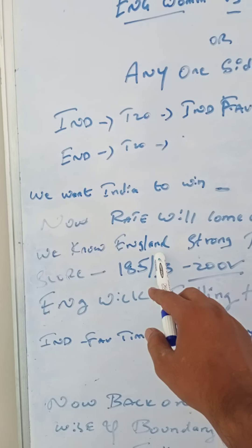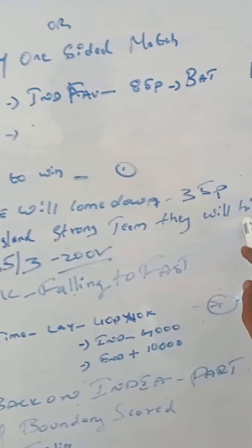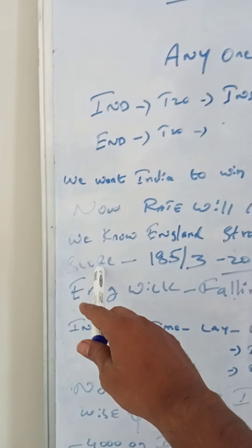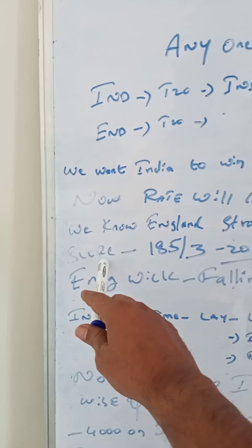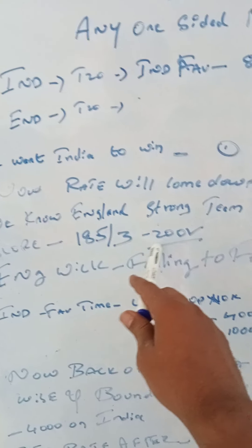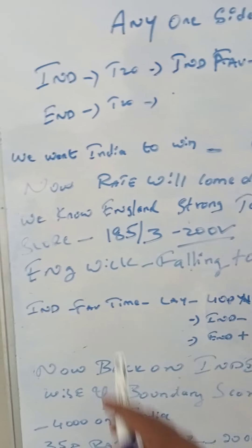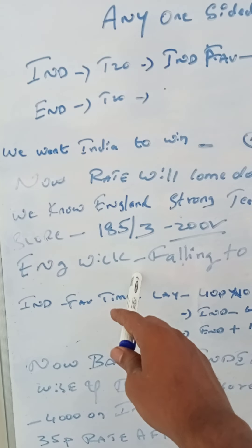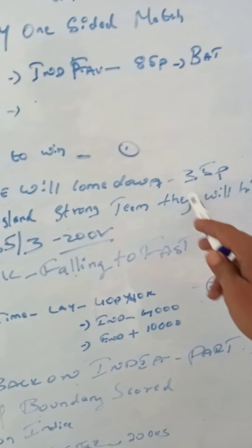In England, they are a strong team. So in the end of the day, the end of the first inning score is 185 for 325. When the rate is given 35% of the rate, it is a strong team.